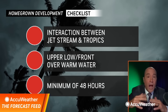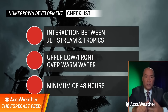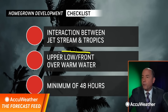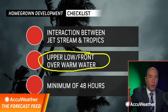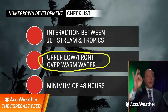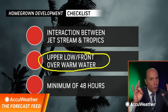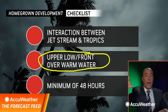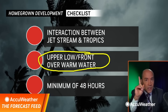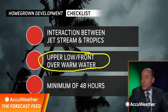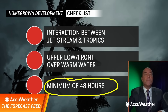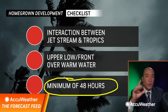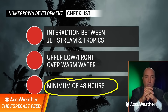As the jet stream comes south, what does it bring down into the tropical waters of the Caribbean and the Gulf? Upper lows and frontal boundaries, which can form storms. Now, once a storm forms, it's usually a cold core storm — because the jet stream is coming from northern latitudes, not the tropics. But if you can get that energy or low pressure to sit over the warm waters for a minimum of 48 hours, you can translate that storm into a tropical system.